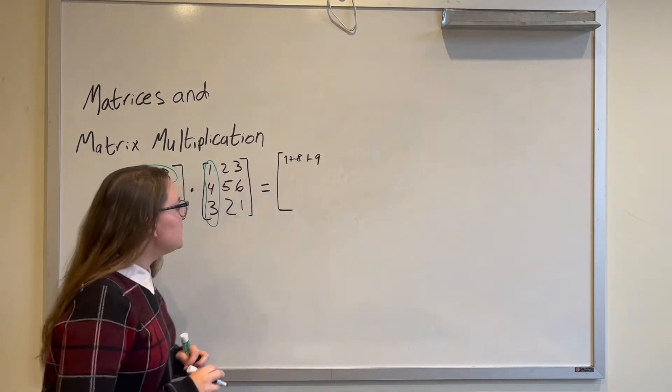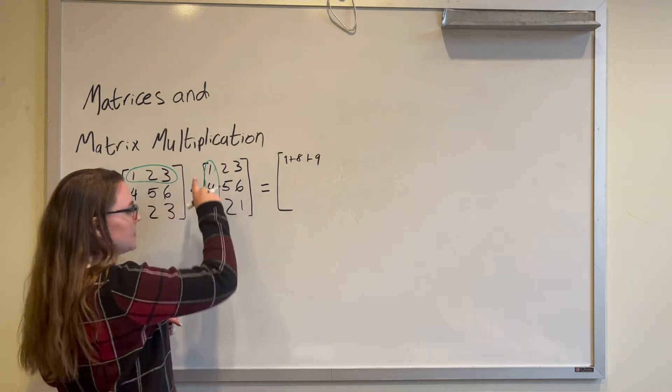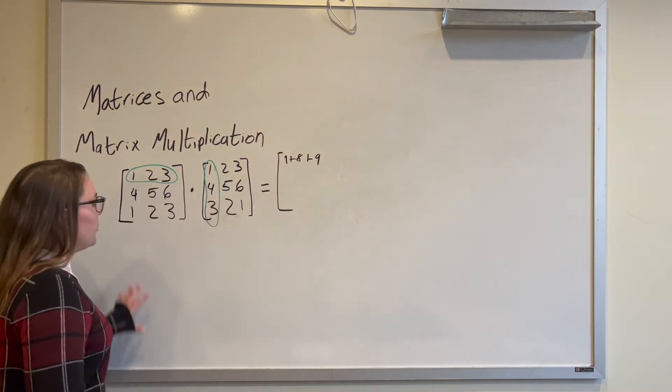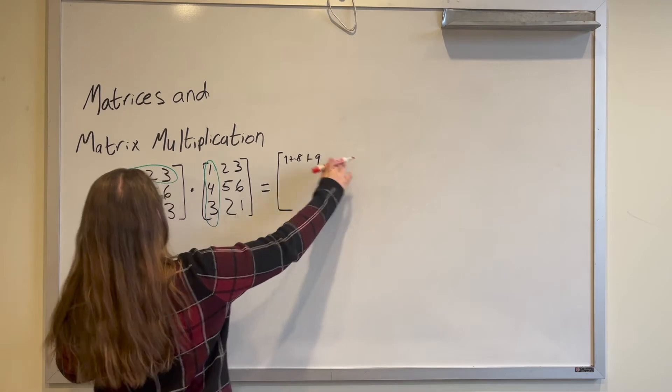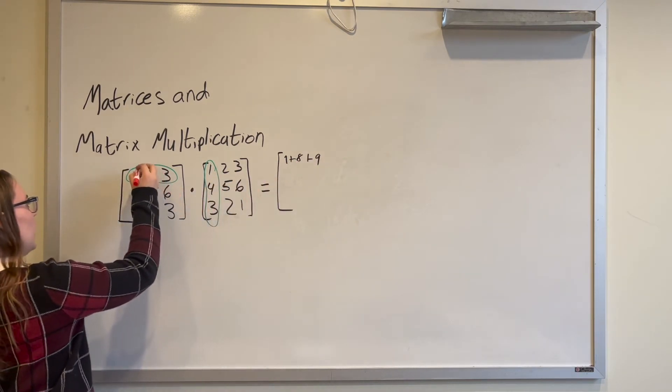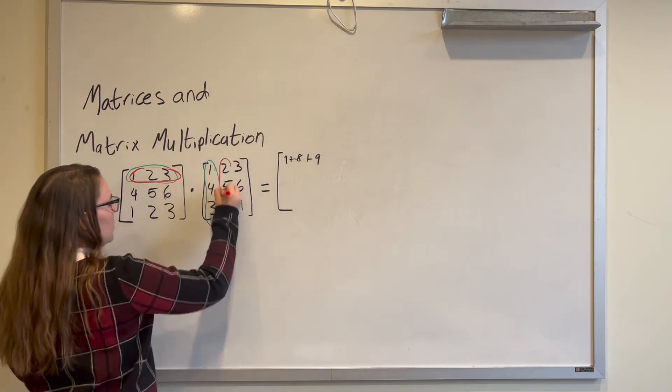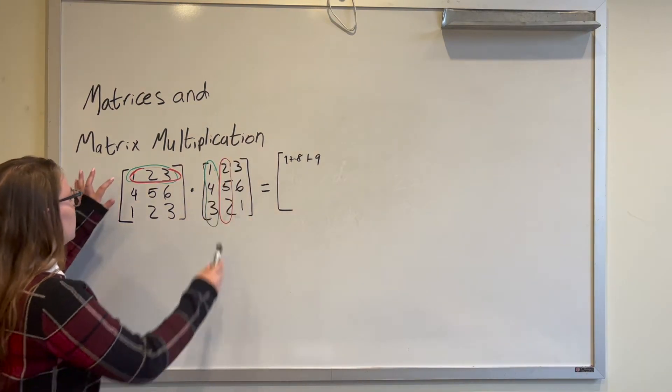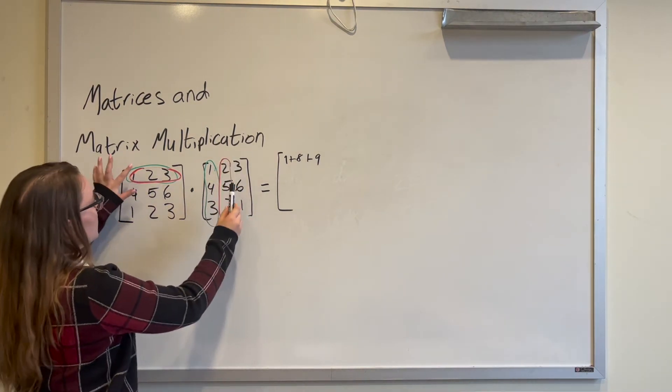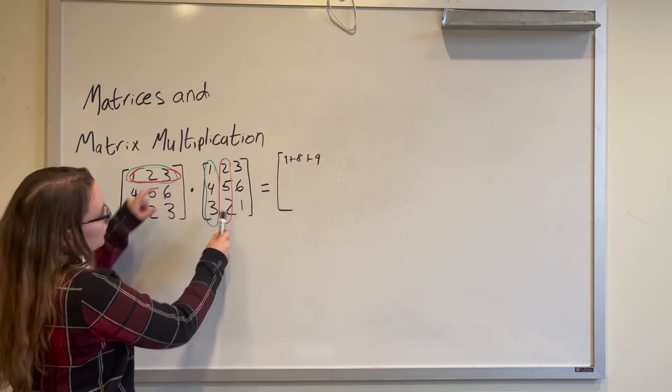And that is the first value in the top left of our new matrix. To get the next value right here, we are going to multiply the first row times the second column. So we are going to do 1 times 5 plus 2 times 2 plus 3 times 3.